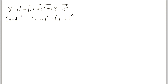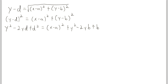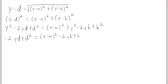Expanding the left side, we've got y squared minus 2yd plus d squared. And that equals (x minus a) squared plus y squared minus 2yb plus b squared. Now we've got a y squared on both sides, which we don't want, so we subtract y squared from both sides. We're left with: negative 2yd plus d squared equals (x minus a) squared minus 2yb plus b squared.